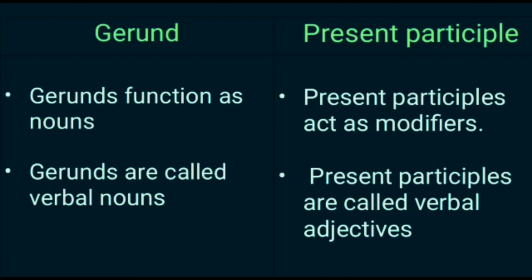Gerunds function as nouns. The key difference is that gerunds function as nouns, whereas present participles act as modifiers.